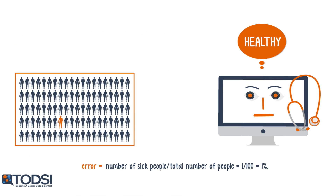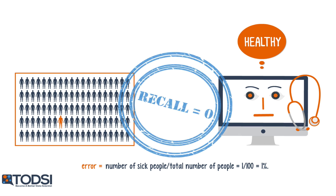Going back to our brain tumor diagnosis example, the model had a recall of zero for the positive class, simply because it failed to identify any of the patients from the dataset with a positive diagnosis.